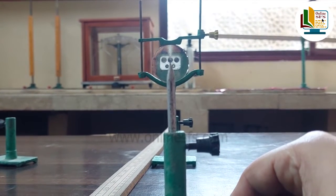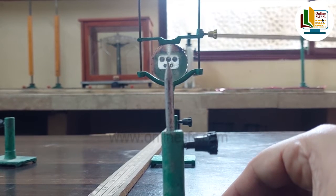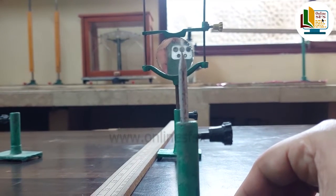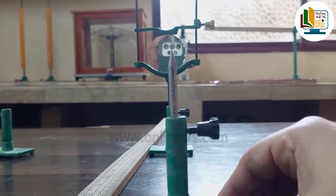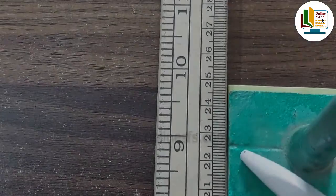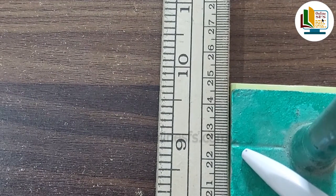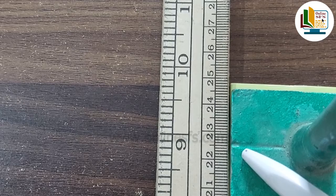One eye close karke head move karenge. Toh downo pins simultaneously move ho rahi hongi without having any difference between them. Here we will note the position of mirror and position of object pin. Yahaan aap dekh sakte hain that the position of pin is found to be 22.5 cm.